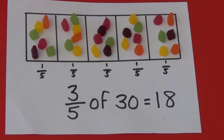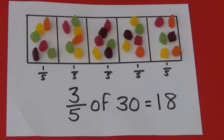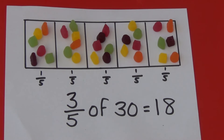For three-fifths of thirty, the denominator is five so that tells me I need to split my bar into five sections and share my thirty sweets between the five sections. The numerator is three so that tells me I need to find out how many sweets are in three of the sections all together. Each section has six sweets, which tells me one-fifth of thirty is six. To work out how much three-fifths is, I need to work out how many sweets are in three sections. There are six in one section, twelve in two sections and eighteen in three sections. So three-fifths of thirty is eighteen.